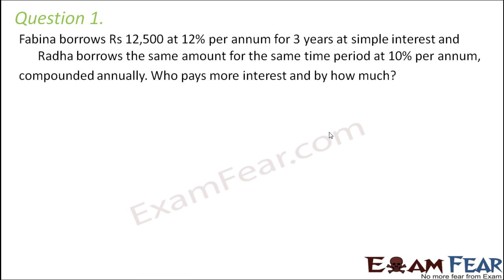Question number one. Fabina borrows rupees 12,500 at 12% per annum for three years at simple interest, and Radha borrows the same amount for the same time period at 10% per annum compounded annually. Who pays more interest and by how much?